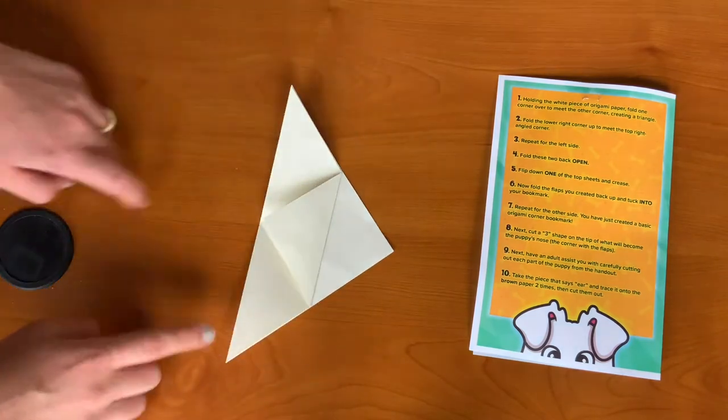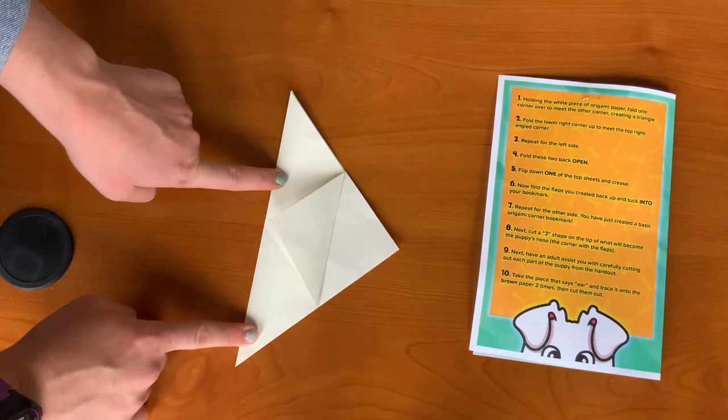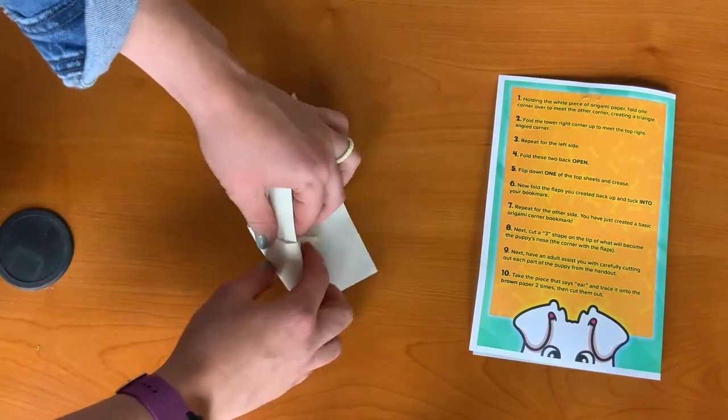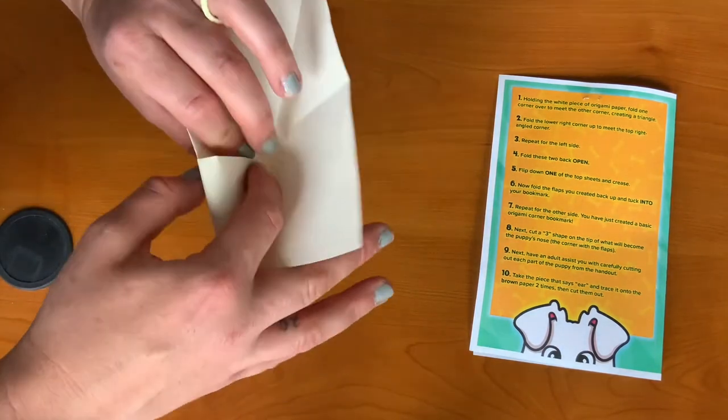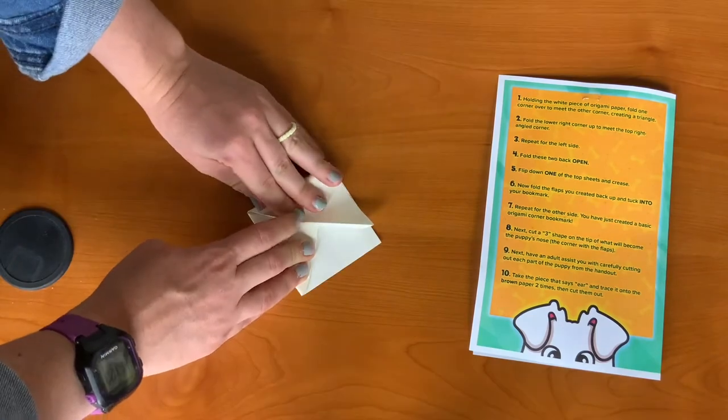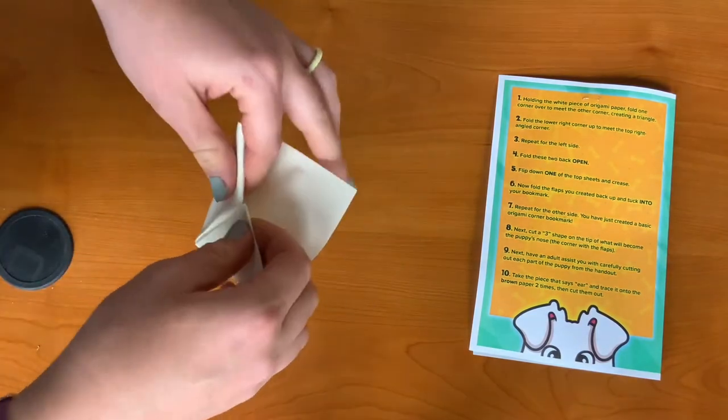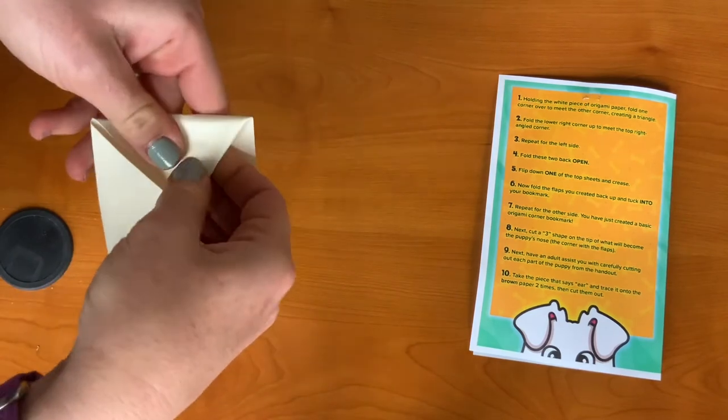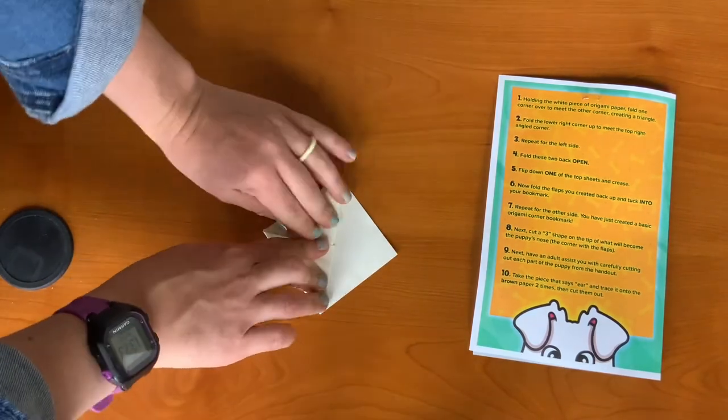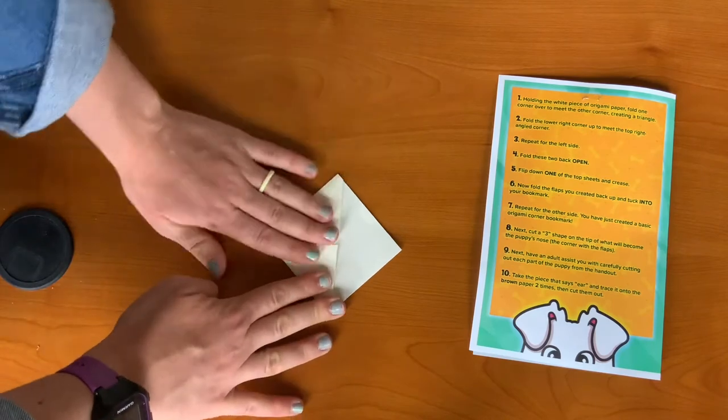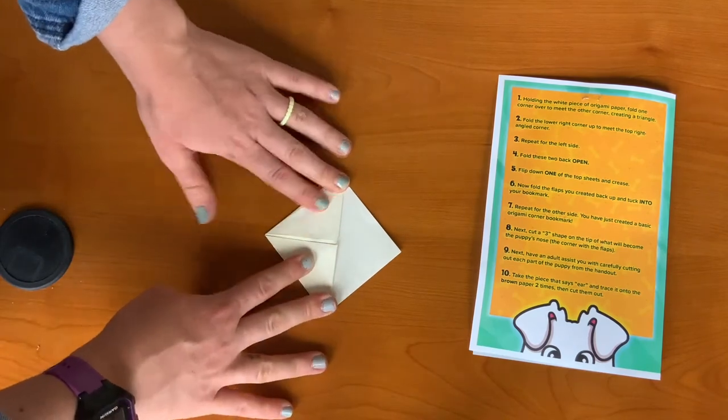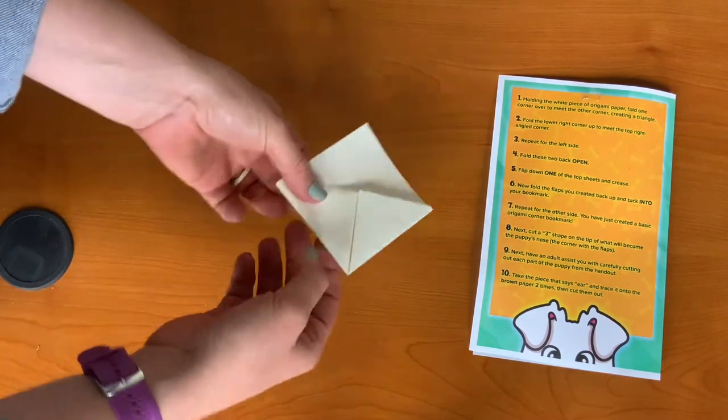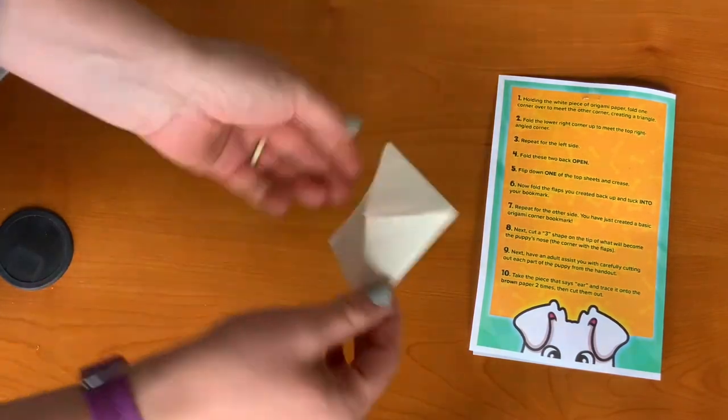Now fold the flaps that you created and tuck into your bookmark. And once you repeat for the other side, you have just created your basic origami corner bookmark.